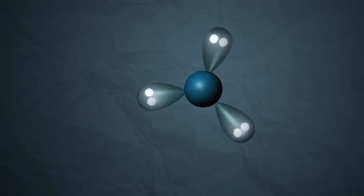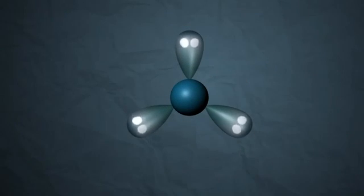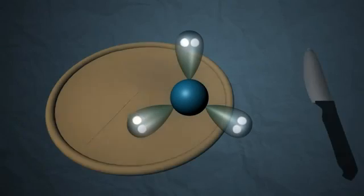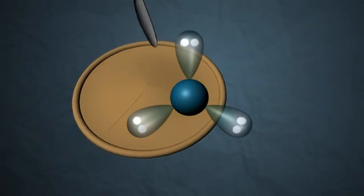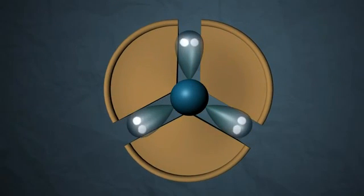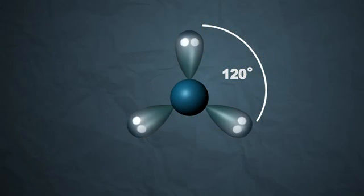Stepping up to the next one, three regions. You count the regions around the central, there's three. If three regions try to get away from each other, you basically get a nice kind of pie shape. It's like taking a pie and cutting it into perfect thirds. You get a 120 degree angle all the way around for those three regions.